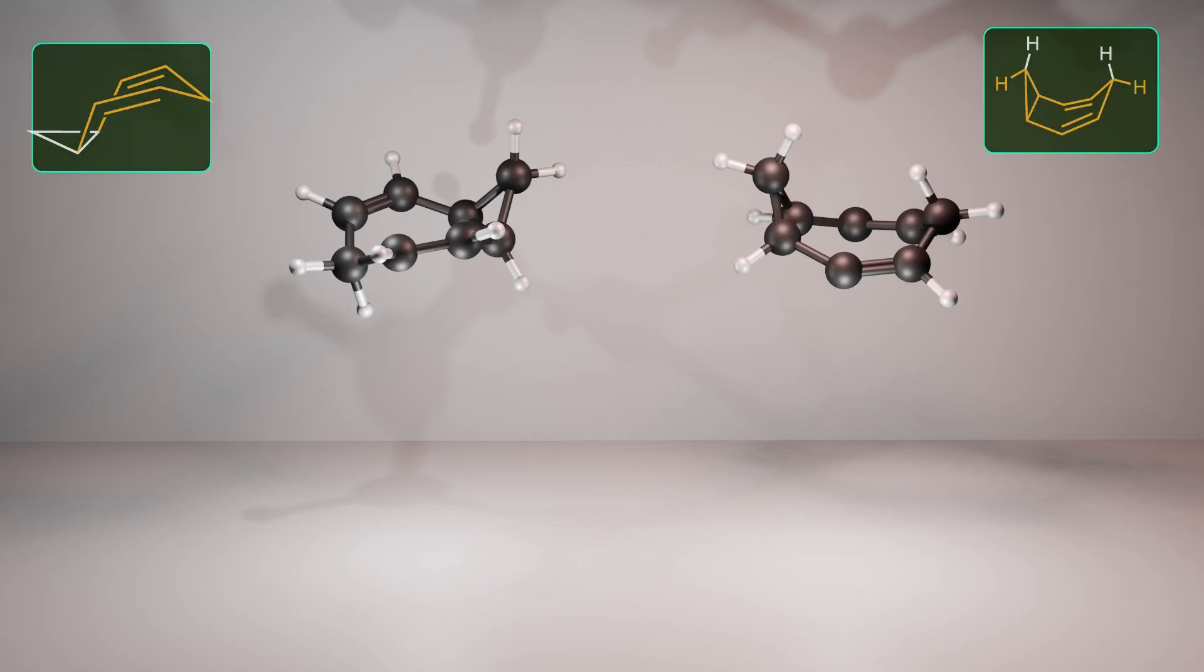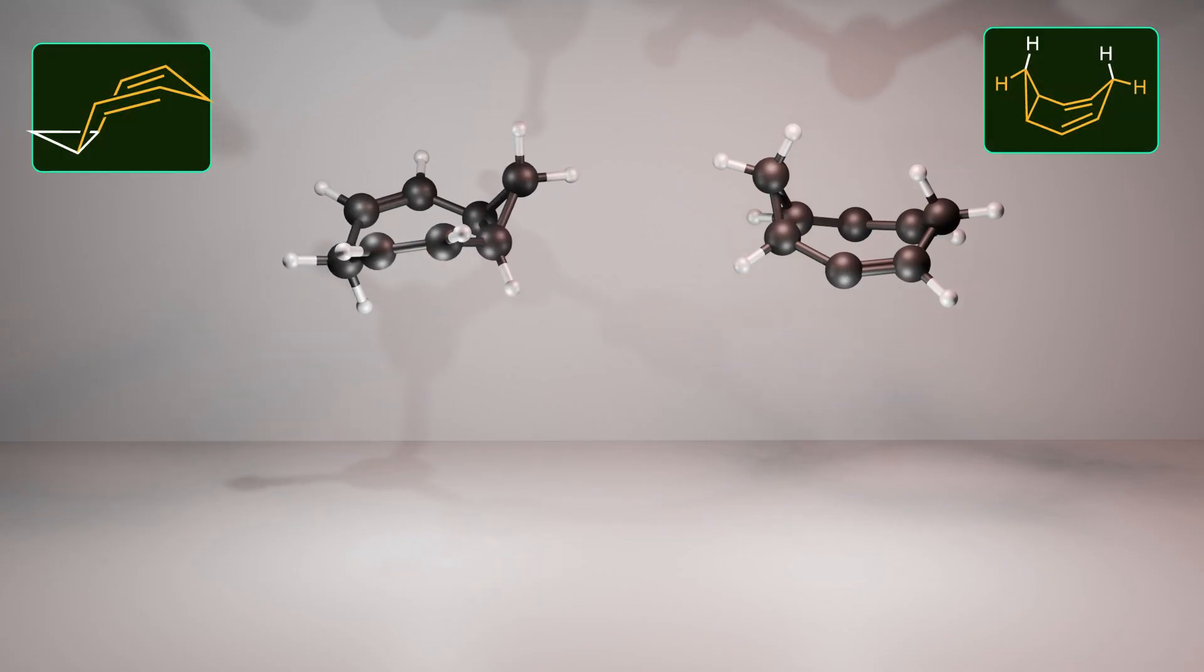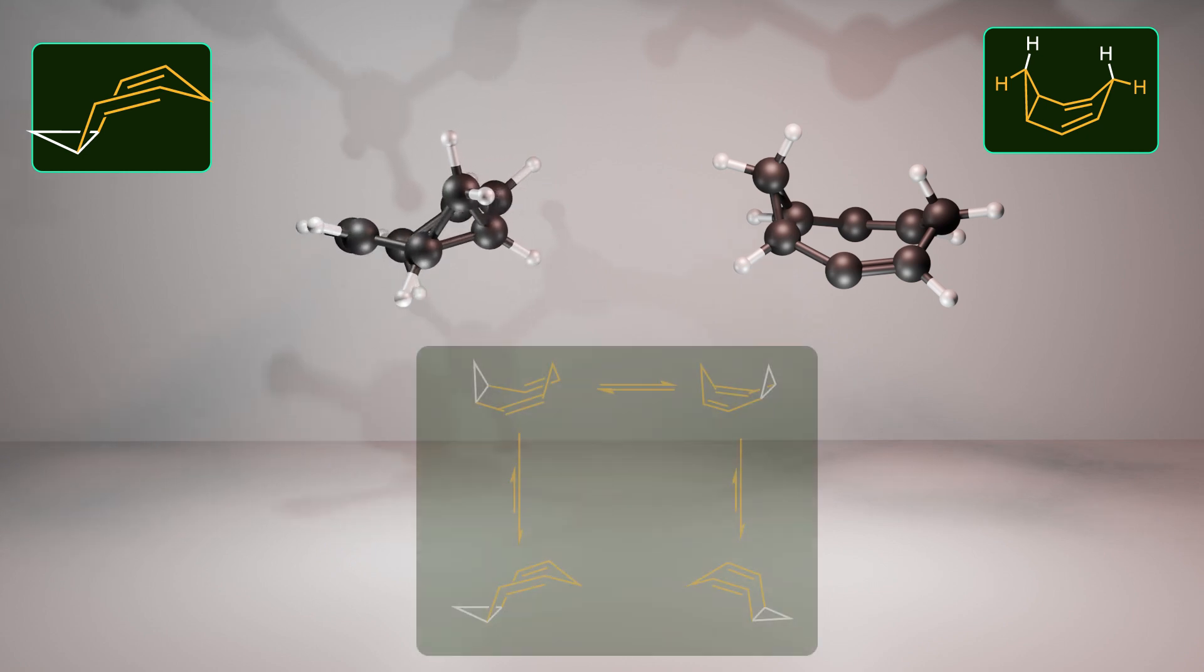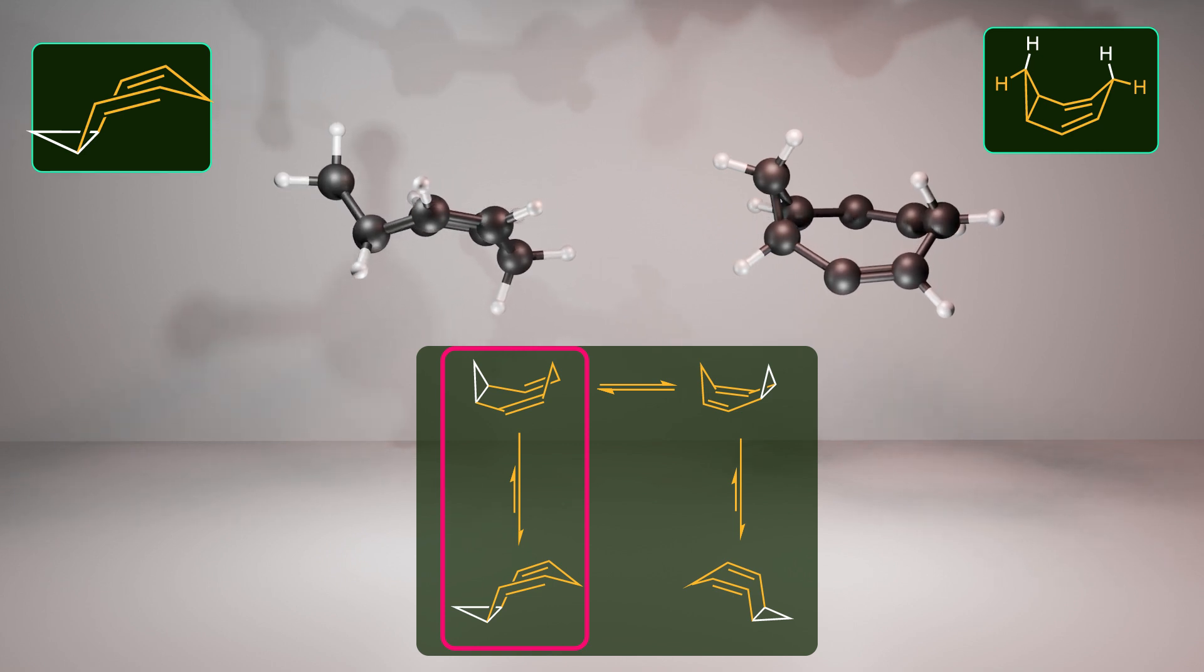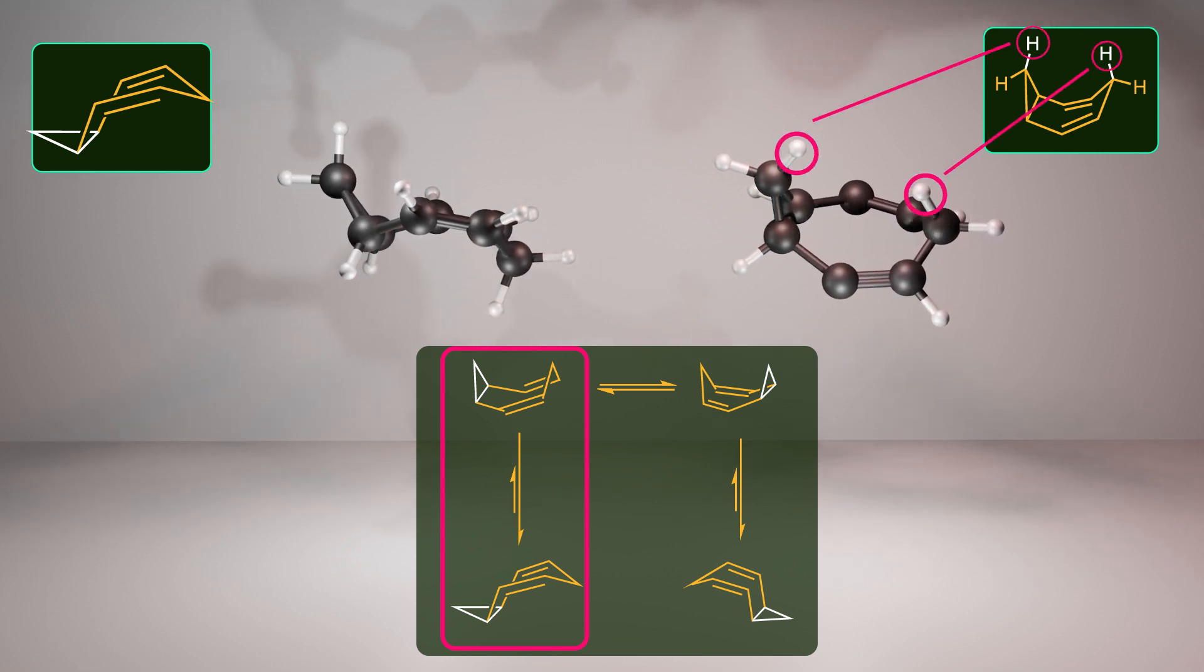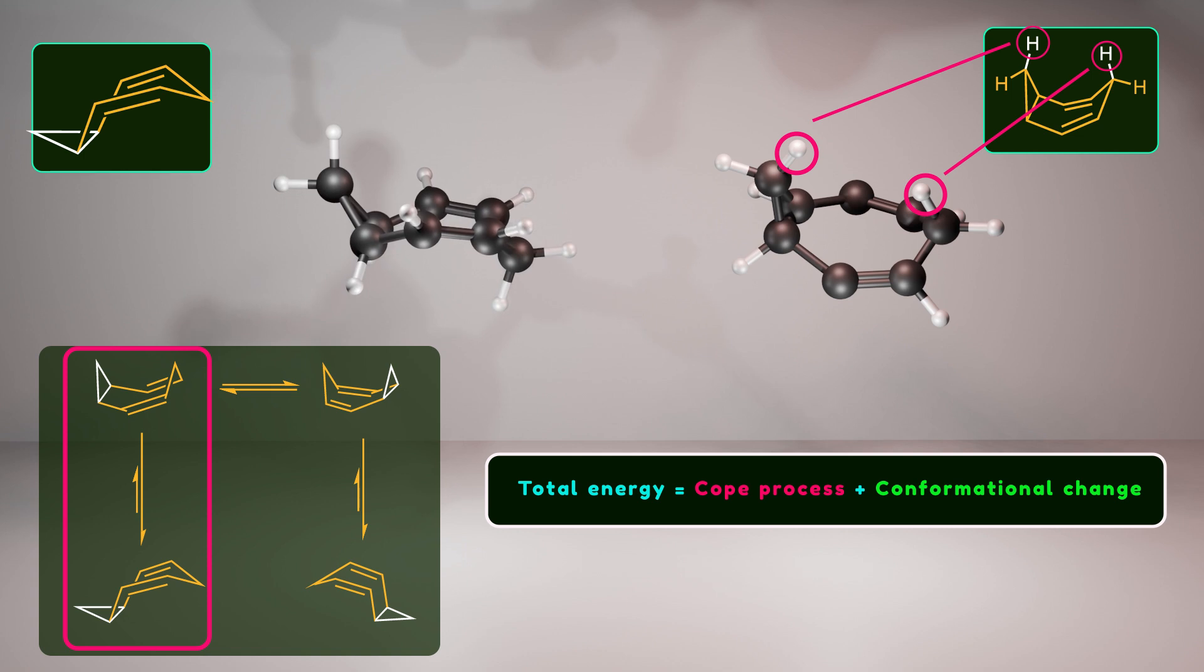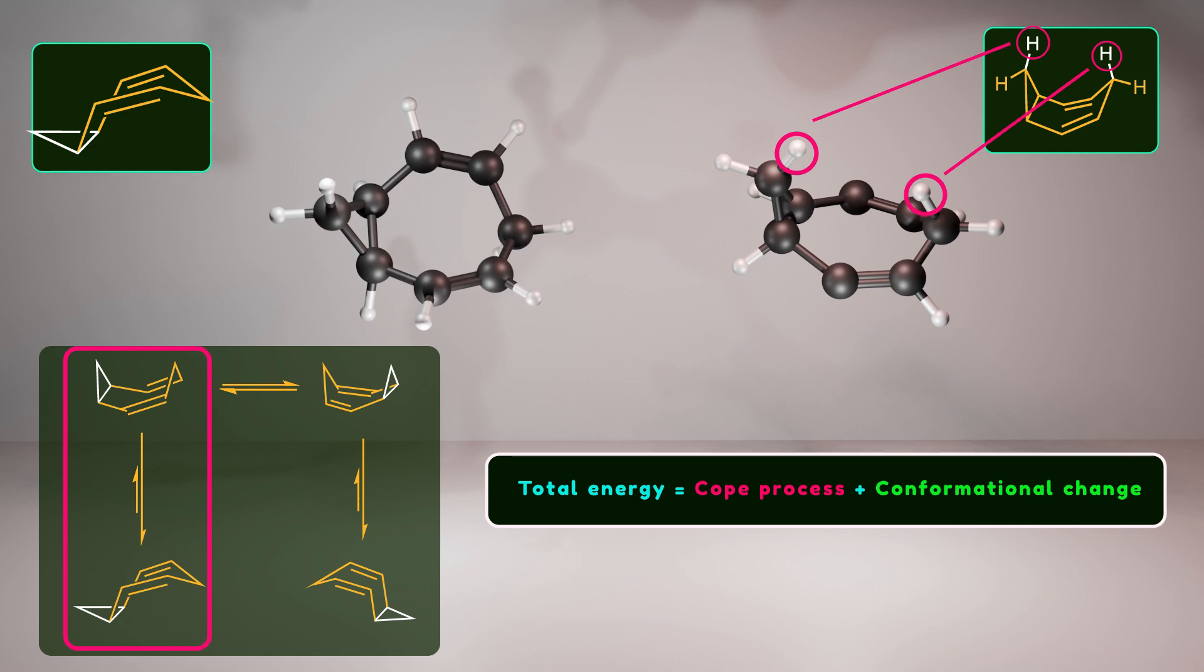Another key result from this experiment is that the most stable form of the molecule is the chair conformation. For the Cope rearrangement to occur, the molecule must adopt a boat-like conformation, which is less stable due to the steric clash between two hydrogens. Thus, the total energy required for the rearrangement includes the activation energy for the Cope process, as well as the energy needed for the conformational change.